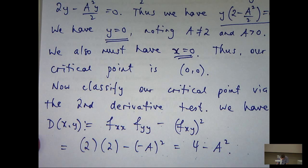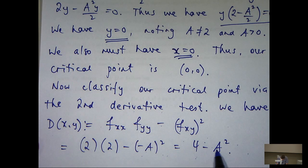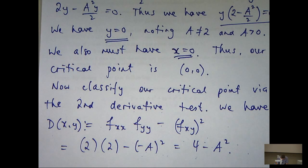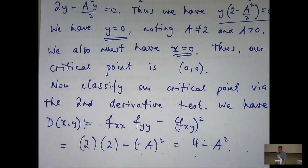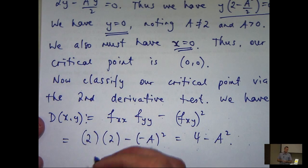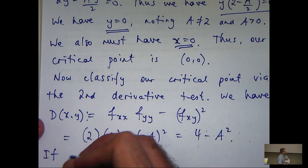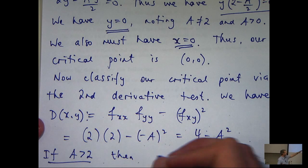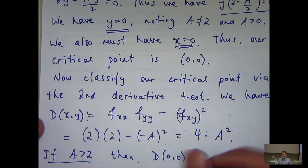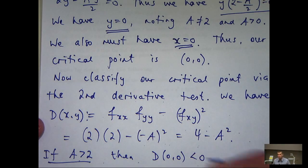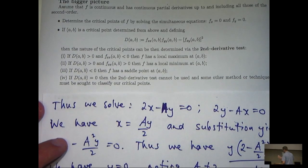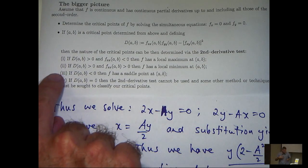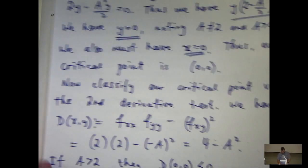Basically, this doesn't depend on our critical point, but it does depend on a. Now what we're going to have to do is split up the cases where a is strictly greater than 2 and when a is between 0 and 2. If a is greater than 2, this will be negative. Let's go to our second derivative test and see if we can make some conclusion. If d is negative, then f has a saddle point.